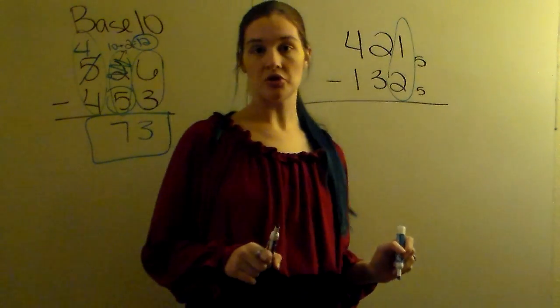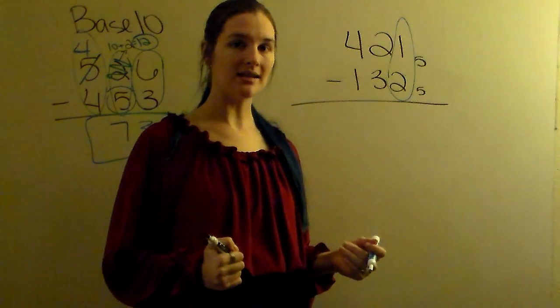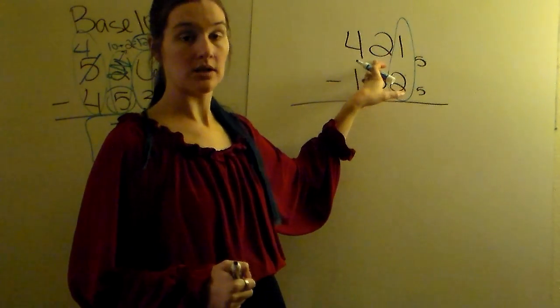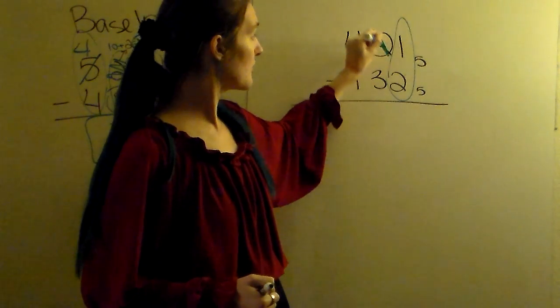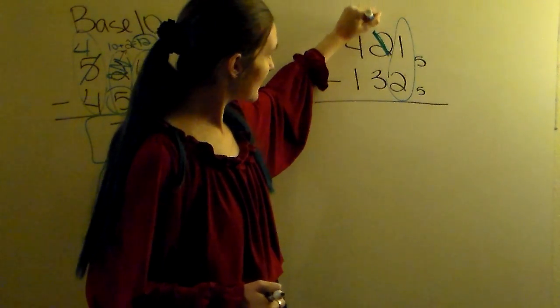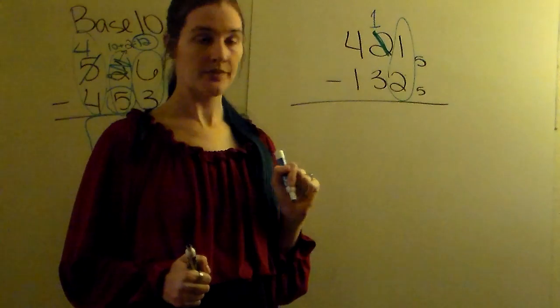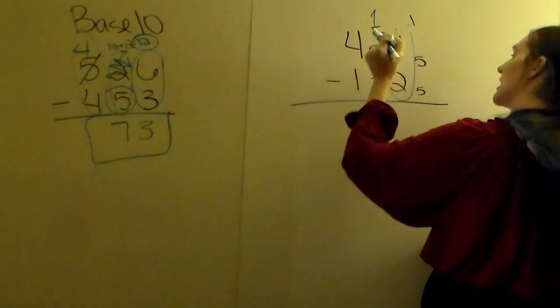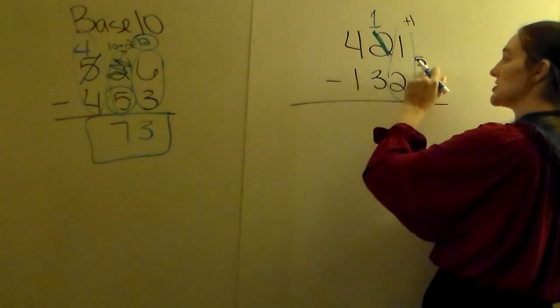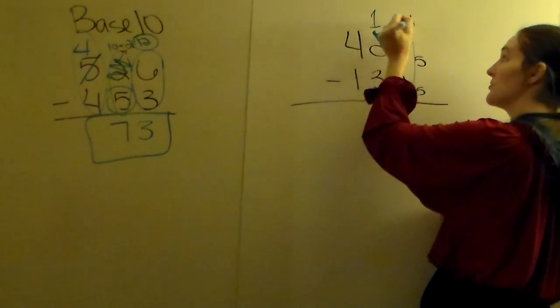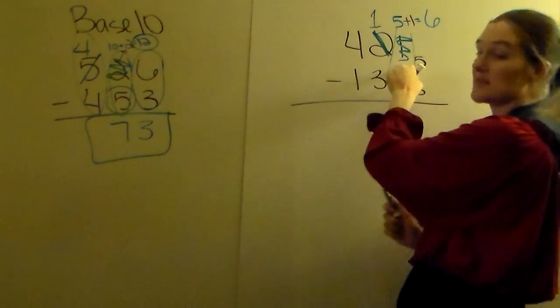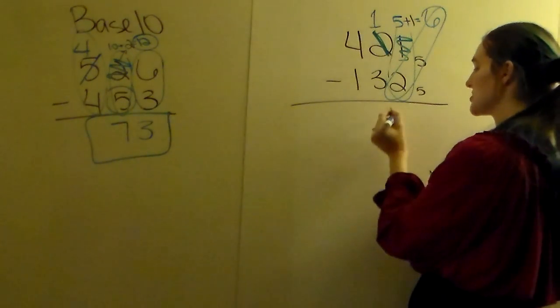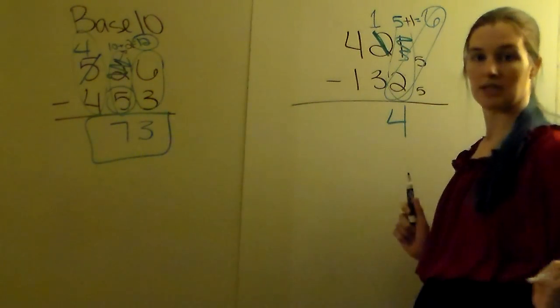1 minus 2 would give us a negative number. We can't have negative numbers. So we go 1 to the left to the 2 and borrow from it. It becomes 1. We take this 1 and add the base to it. Base 5 plus 1 is 6. We now have 6 instead of 1. 6 minus 2 gives me 4.